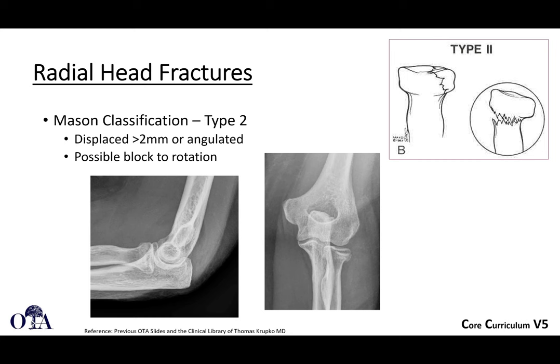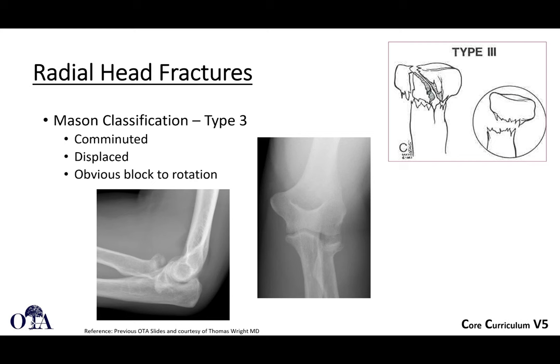Mason Type 2 is a displaced or angulated fracture — you can see a double density with the fragment displaced but not significantly comminuted. There may be a possible block to rotation in Type 2 fractures. Mason Type 3 fractures are comminuted with multiple fragments. In Type 3 injuries, particularly in the context of terrible triad injuries, surgeons may be more inclined toward replacement rather than fixation, whereas Type 2 fractures are frequently fixable. Type 3 fractures typically have some block to rotation.